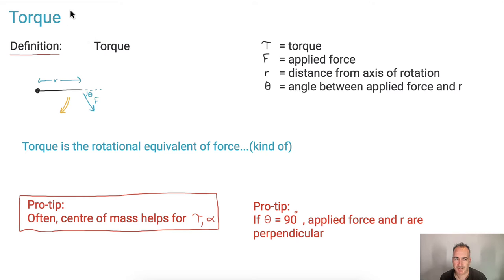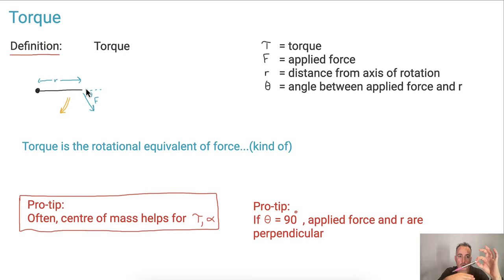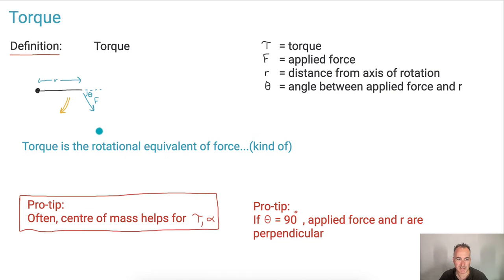So first of all, let's look at this. Assume we have some pivot point — that's this dot here — and we have a stick going out. It's like, here's my pivot point, it's going to be my fingers, and here's my pencil. Now, if I apply a force downwards, I could make it turn or rotate. So torque is kind of a rotational equivalent of force — not exactly, but it's related.